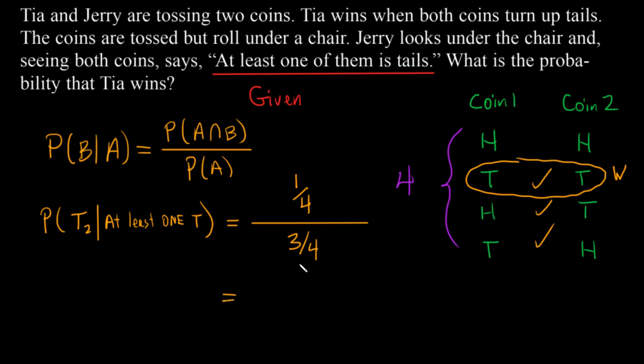If we go ahead and we were to simplify this and do our math and do our fraction work or use a scientific calculator, we get one third. And so there is a one third chance that Tia wins given this information.